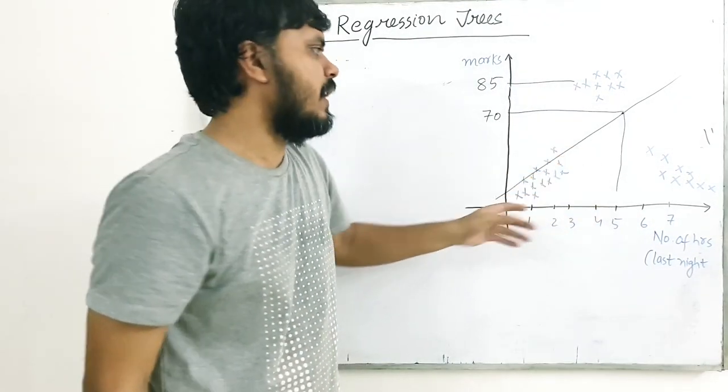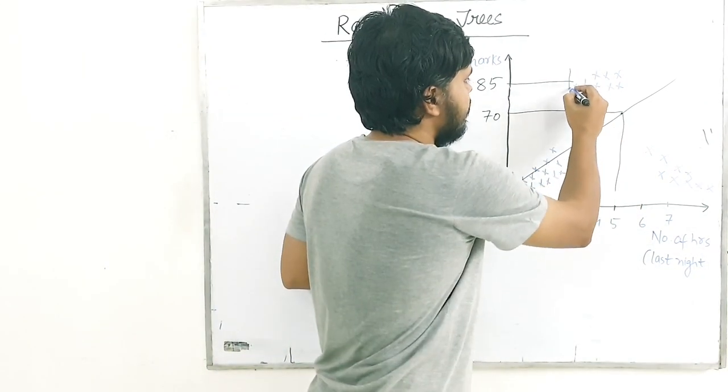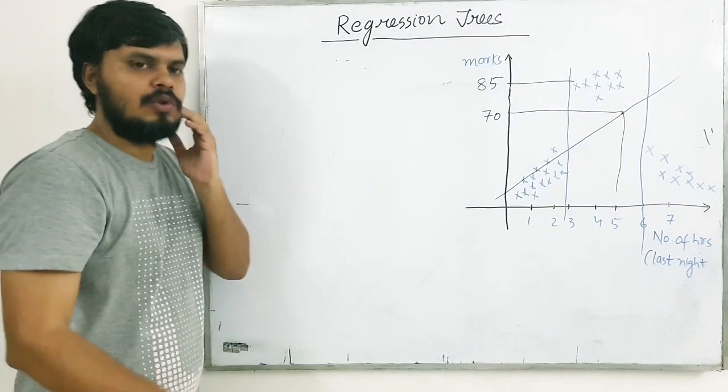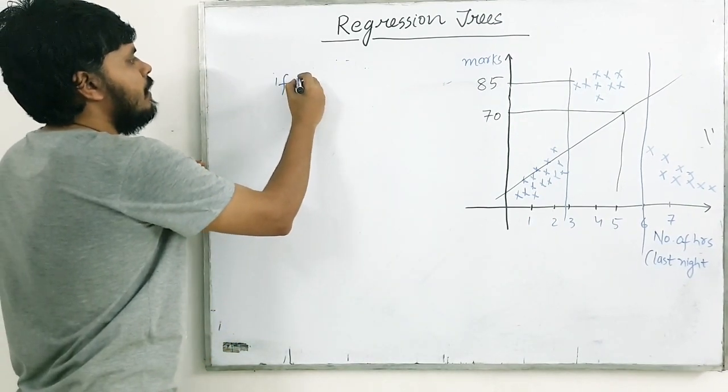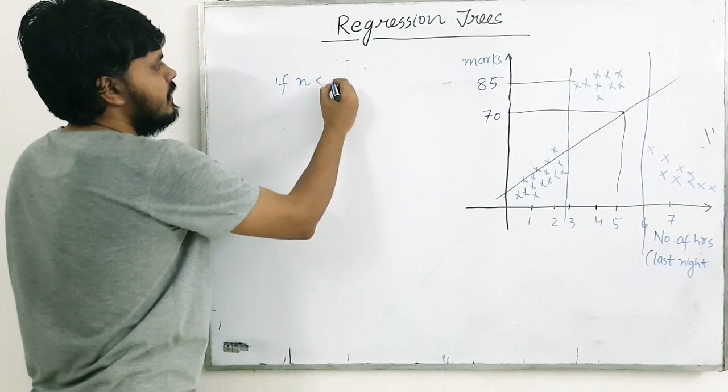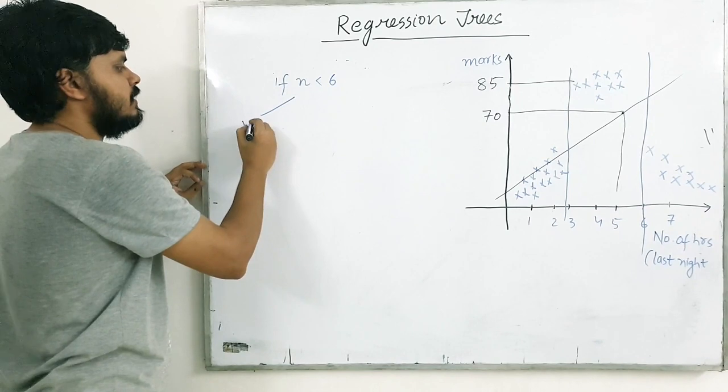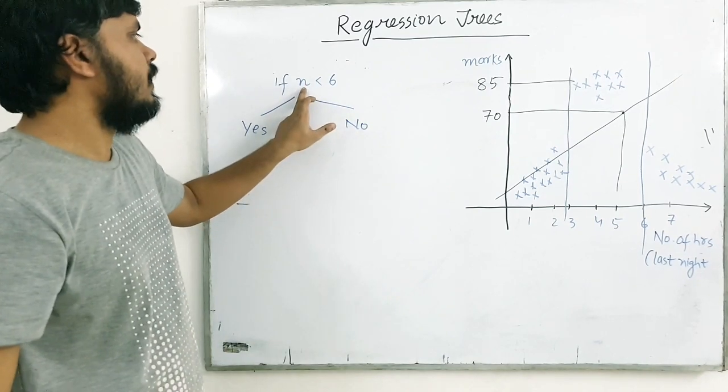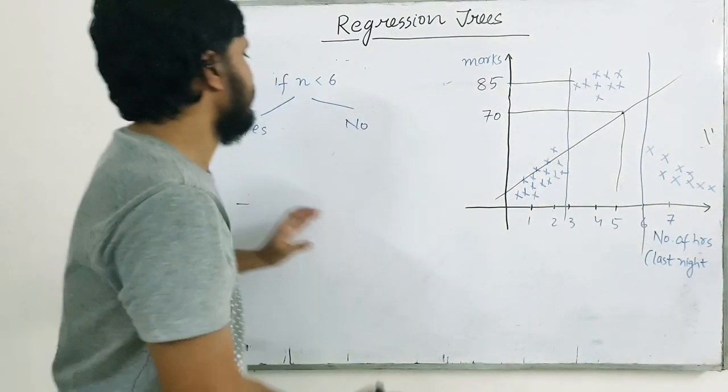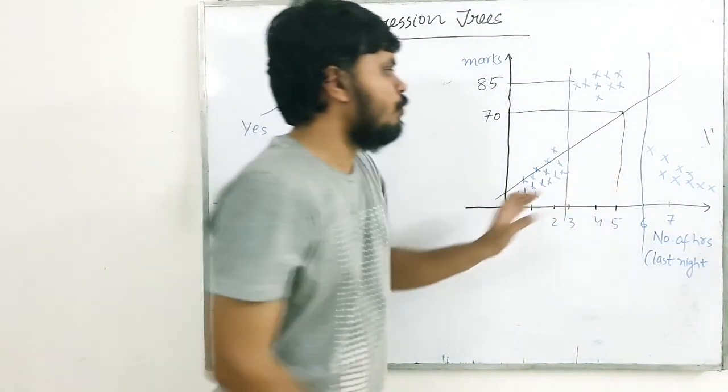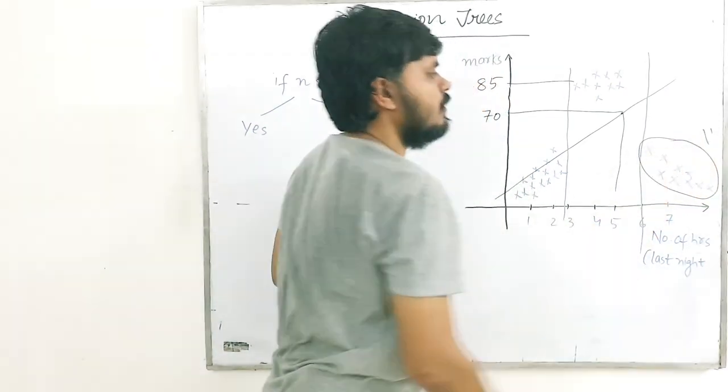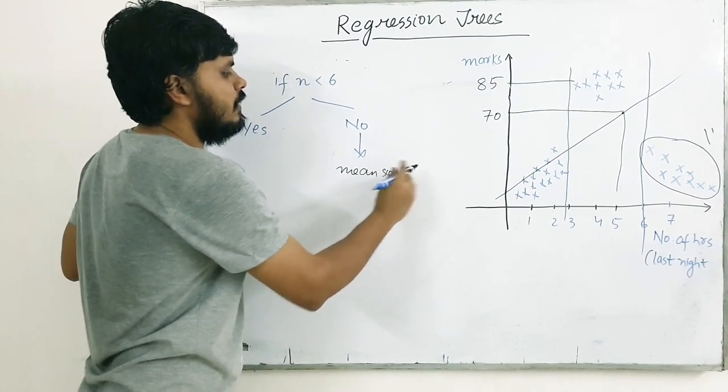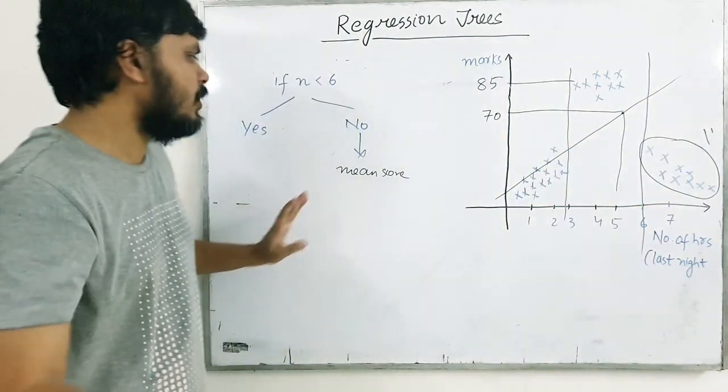So, basically, you can see haan, par aapke 2 cuts padenge. So, one cut would be this. Let's say, 3 ghante ke threshold pe. Aur ek aur cut hoga 6 ke threshold pe. So, aapka code kuch aisa hone waala. You will write. If number of hours is less than 6. Yes. No. Right? Let's talk about no. Matlab, number of hours is less than 6. Matlab, yeh zyada hai. Matlab, hum in students ki baat kar rahe hain. Toh hum yahan pe simply, kya karenge? Hum yeh jo pure students hain, yeh cut pada do. Main in sab students ke marks ka mean nikaal dunga. Aur, main mean score bol dunga. Ki, yeh hi, is bachche ka score hoga.